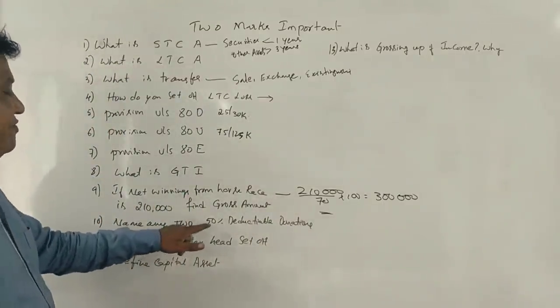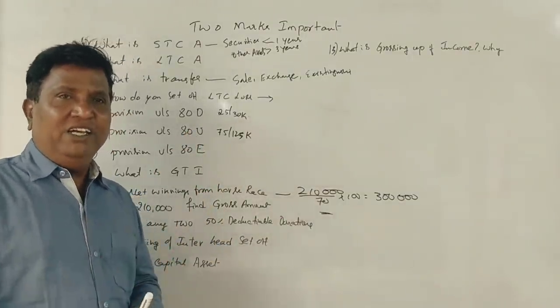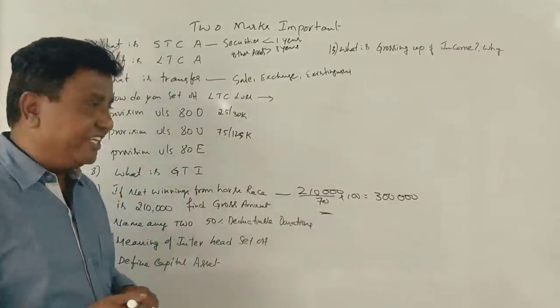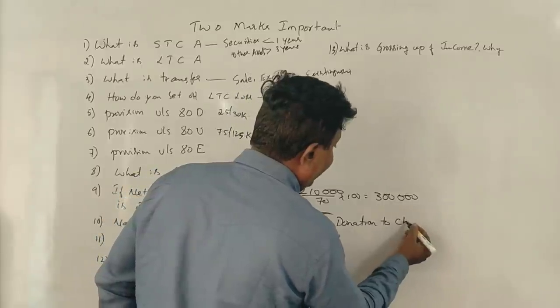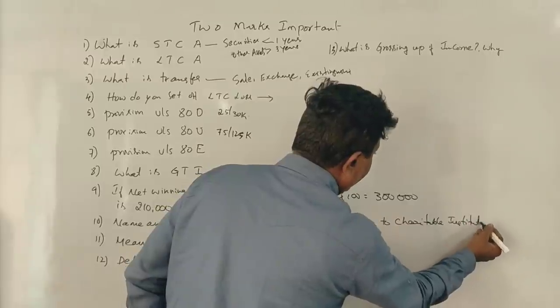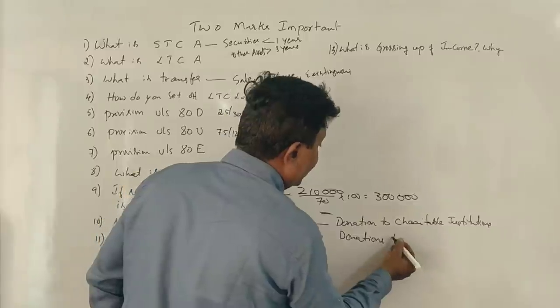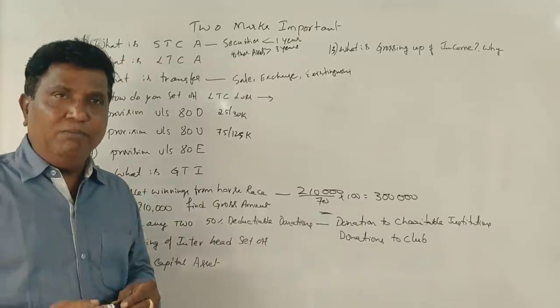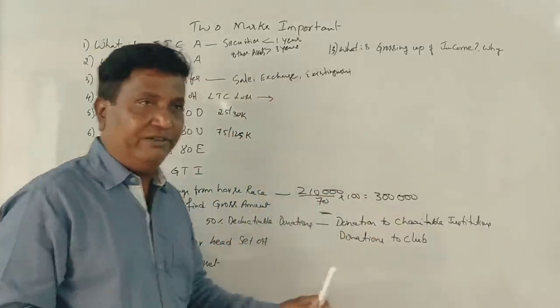Name any two 50% deductible donations. Donation to charity, charitable institutions, donations to club, correct? Donation to any temple, mosque, church, you will get only 50% deduction.